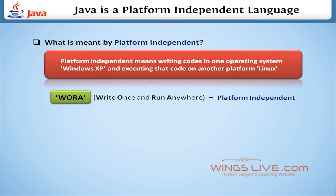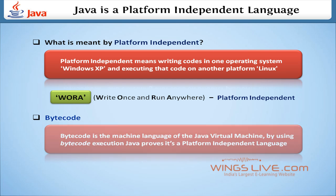Do you know how Java becomes platform-independent? It is due to the key phenomenon of bytecode. Bytecode is a machine language of the Java virtual machine. By using bytecode execution, Java proves it is a platform-independent language.